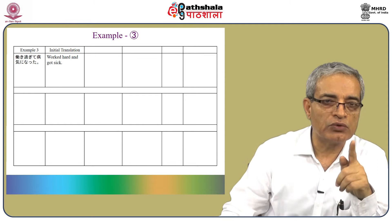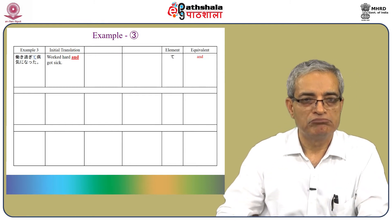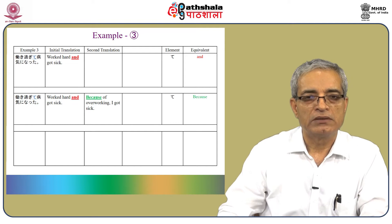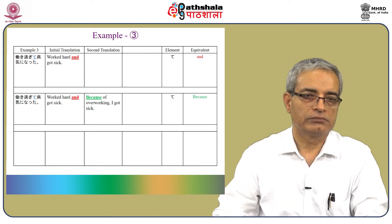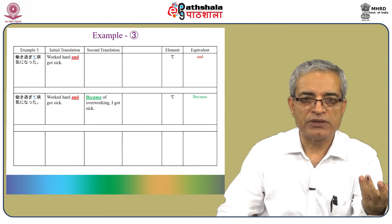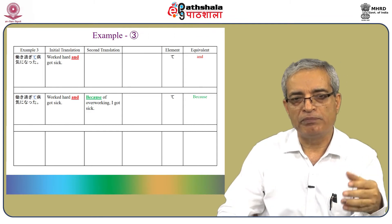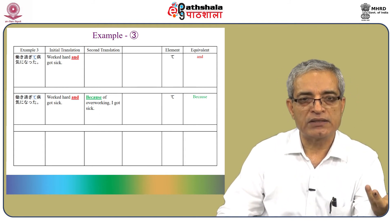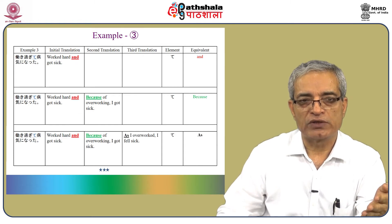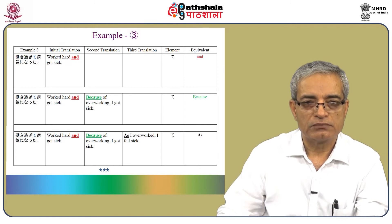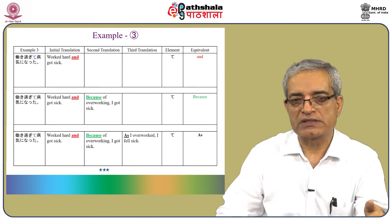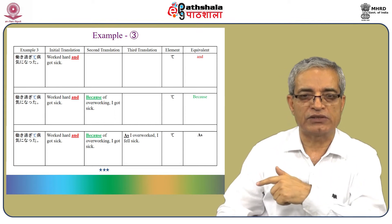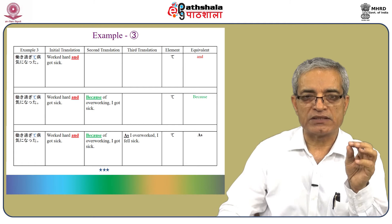Here goes the translation for 'Hatarakisugite, byoki ni natta.' Initial translation: 'Worked hard and got sick' — te is translated as 'and.' Second translation: 'Because of overworking, I got sick' — attributing reason, 'because' is used for te. Third translation: 'As I overworked, I felt sick' — 'as' is for joining, so te is translated as 'as' here. Again, it is a mild reason.